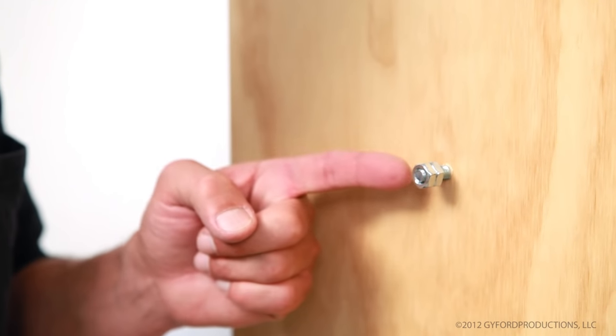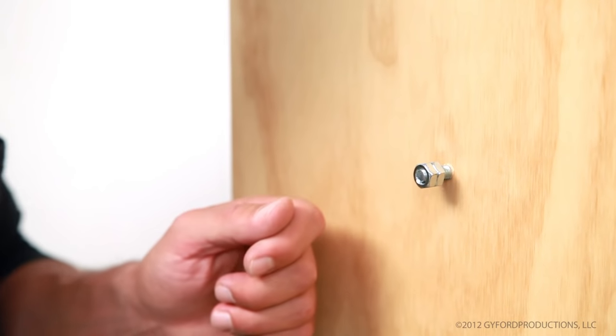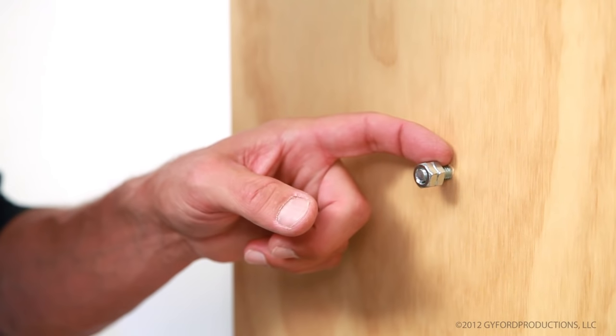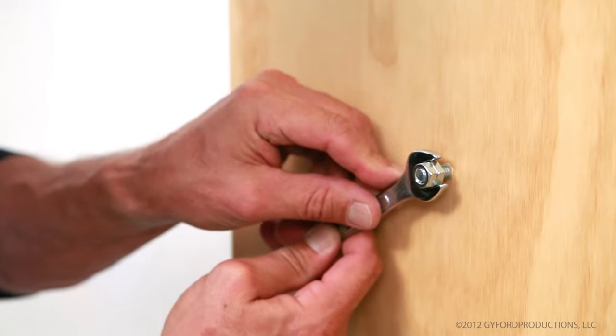So, starting with our jam nuts already in place and jammed together, we're going to use the inside nut to back the screw out.